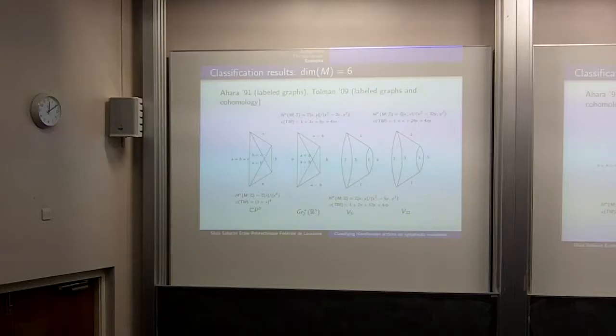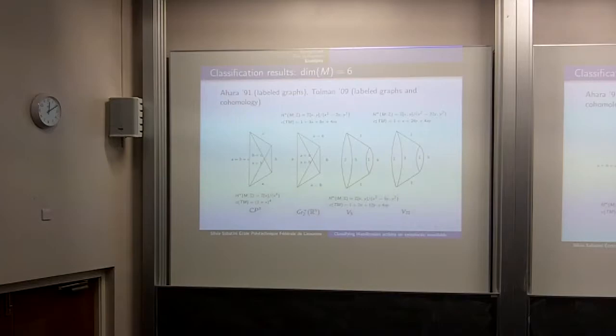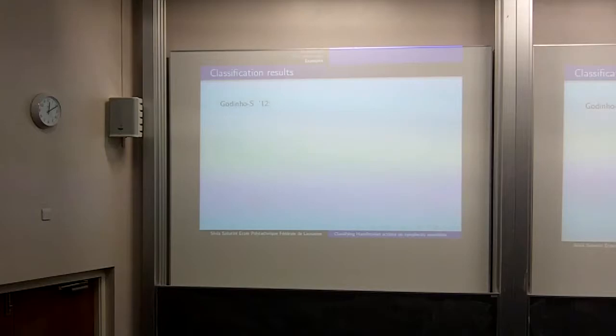Sue McDuff suggested extending these results to dimension 8. She said she had already tried but didn't succeed, which worried me. I started working with Godinho (at Instituto Superior Técnico in Lisbon) to continue their earlier work. The methods Tolman used in the 6-dimensional case all applied, but there were about 12,000 cases to investigate — I eventually convinced myself it could be reduced to 200, but each case had several sub-cases. I figured this was not the best approach.